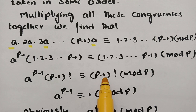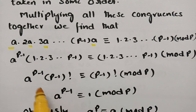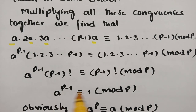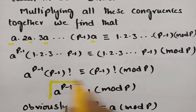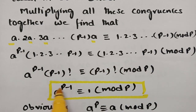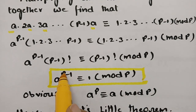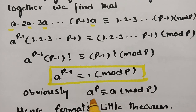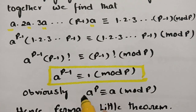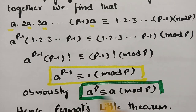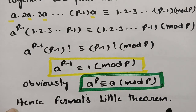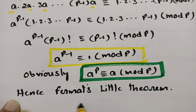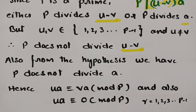Dividing both sides by (p−1)! gives a^(p−1) ≡ 1 (mod p). Alternatively, this can be written as a^p / a, and multiplying both sides by a gives a^p ≡ a (mod p). Hence this is Fermat's Little Theorem.